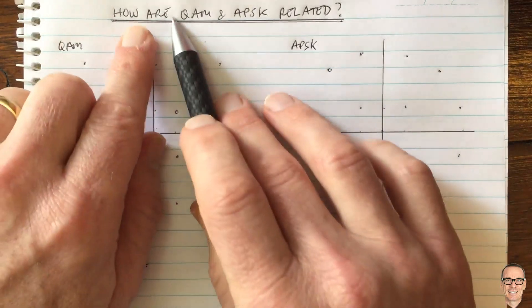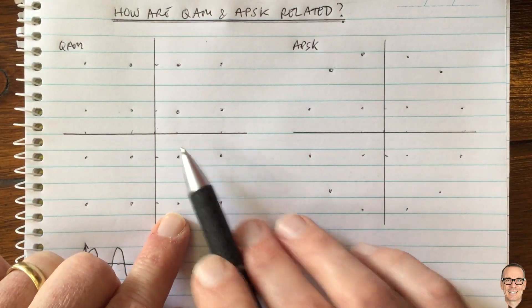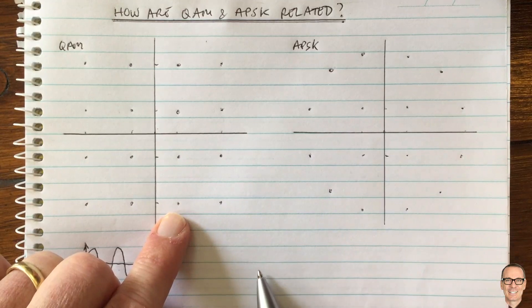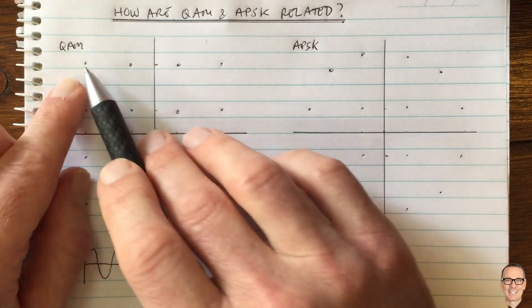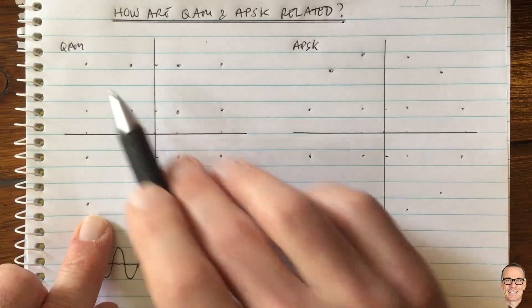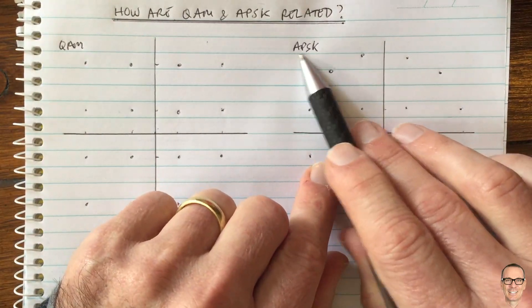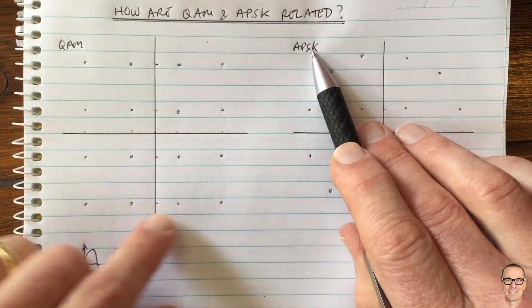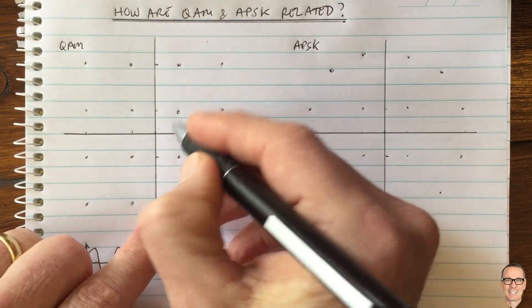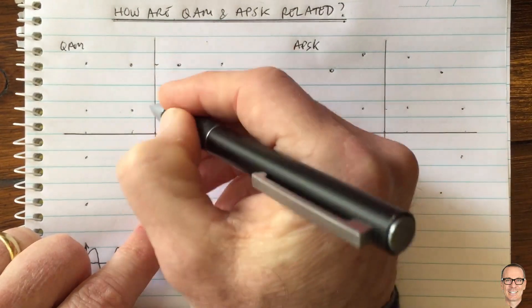When we're asking how they are related, one thing to look at is to make sure that the powers are related when comparing the two different schemes. So what are the advantages and disadvantages of having your points on a square grid, like in QAM, versus this arrangement where they're all on circles in amplitude and phase shift keying? The first thing is to make sure they're equal in terms of their scaling and their power.